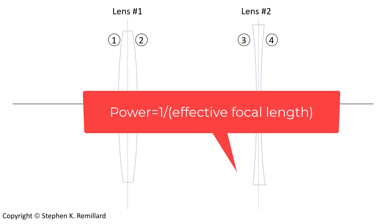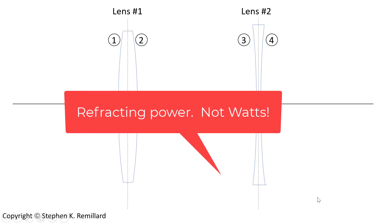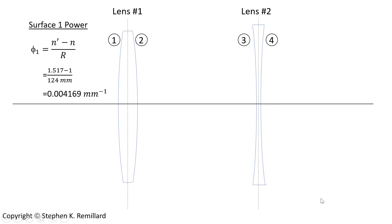To find the power of the lenses, we need to find the power of each surface. Altogether there are four surfaces in this problem. Power is the difference in the refractive indices between the two sides of the surface, divided by the radius of curvature of the surface in the paraxial limit. Given the index of refraction of the glass and the radius of curvature, we have the power of the first surface.